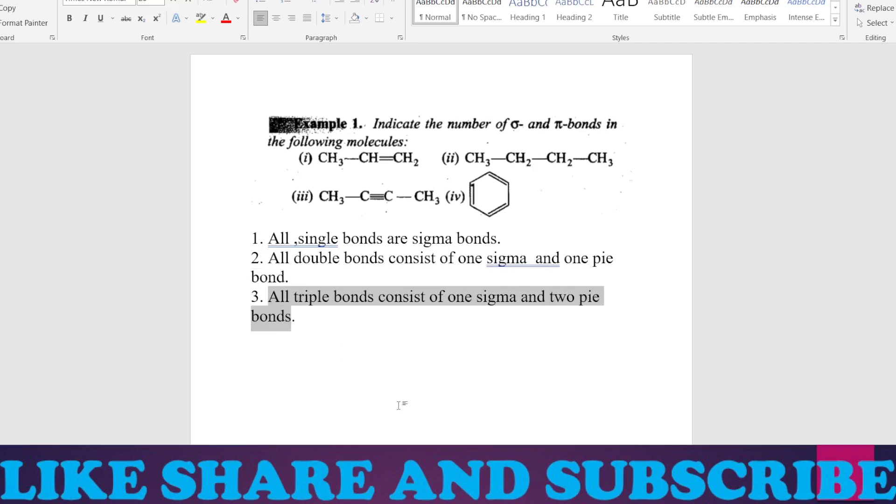Remember, if you have sigma then all the single bonds are sigma bonds. If you have double bonds then one is sigma, another is pi. If you have triple bonds then one sigma and two pi.